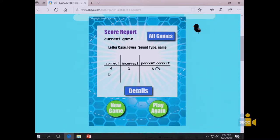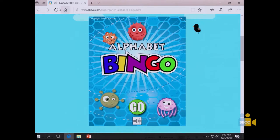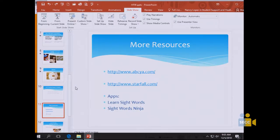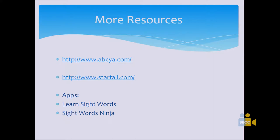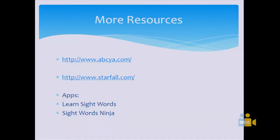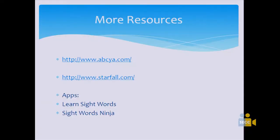At the end it shows how they did — for example, four correct, two incorrect, and a score of 67. Those are two websites I felt were pretty kid-friendly for kindergarten and first grade. There are also two apps listed on the green sheet, but those are from the App Store, so they work for Apple or iPad but not Google Play.